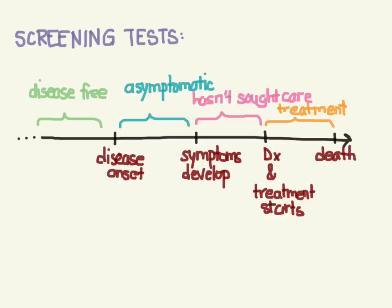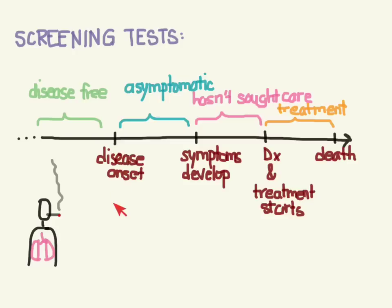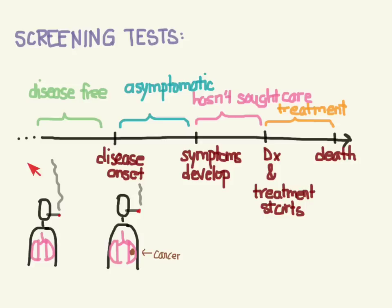Let's use an example to illustrate this. Say we've got a guy who smokes. At this point, even though he smokes, he doesn't have any lung cancer yet. But then he develops lung cancer. So in this portion he's disease-free, and now we have the disease onset — he developed the cancer, but he's asymptomatic, so he doesn't even know he has the cancer yet.